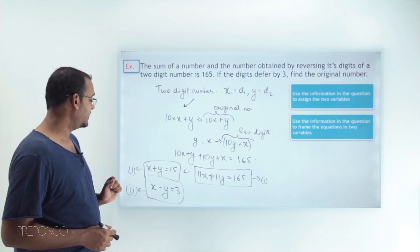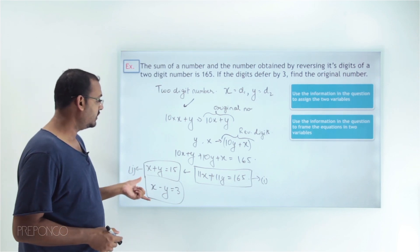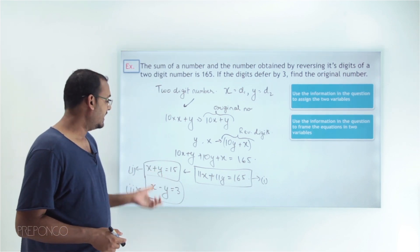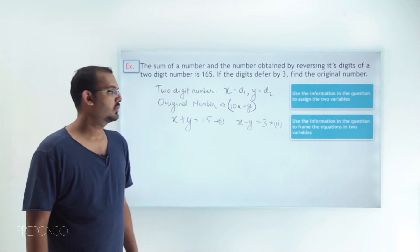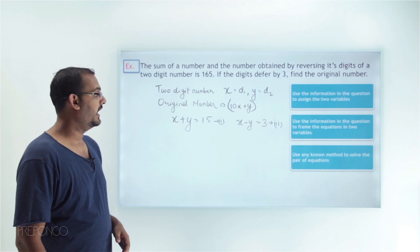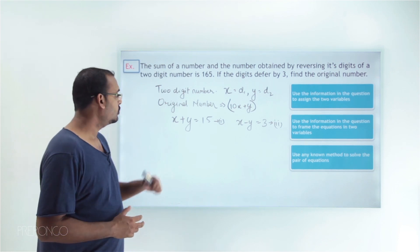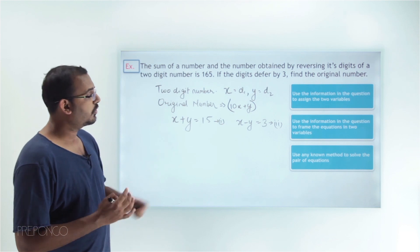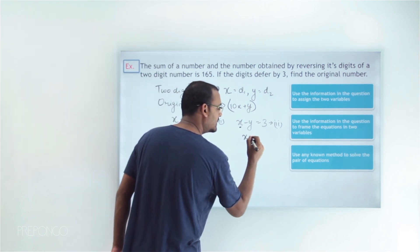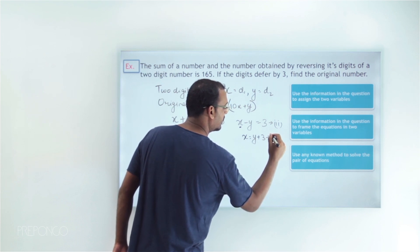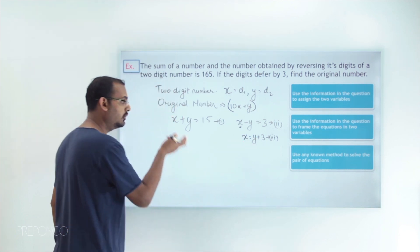Now I have a pair of linear equations in the variables x and y, which are the first and second digits of the original number: x plus y equals 15 and x minus y equals 3. We can solve this pair of linear equations by any of the four methods. We will use the method of substitution. From the second equation, I can find the value of x in terms of y: x equals y plus 3.